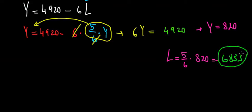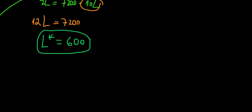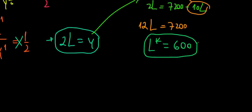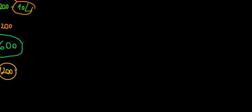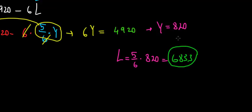Now let's compare how much she rests when she has the benefit versus when she doesn't. In the previous video, without the benefit, Betty rested 600 hours instead of 683.3 — so she rested less, meaning she worked more. Her income without the benefit was 2 times 600, which equals 1200 euros. So she earned more money because she worked more. With the benefit, she makes only 820 euros but has more leisure.